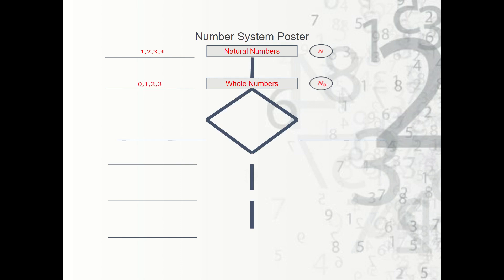Once we learned that there was zero, the next thing we learned was there are numbers on the other side of zero as well — negative numbers. We call those integers, and the symbol for integers is Z. These include all the whole numbers — so all the natural numbers and whole numbers — but the negative versions of them as well. So it includes negative two, negative one, zero, one, two, etc.